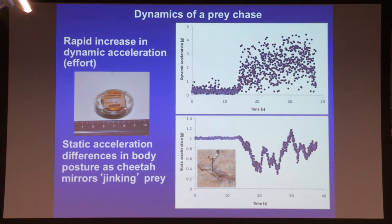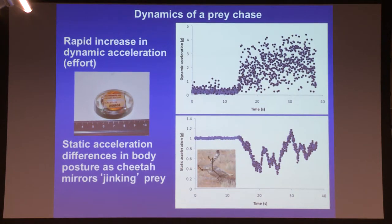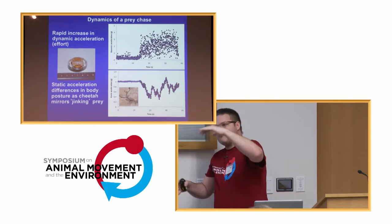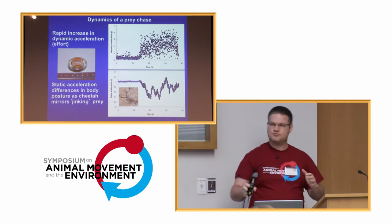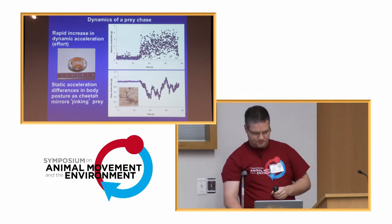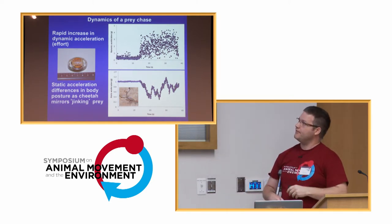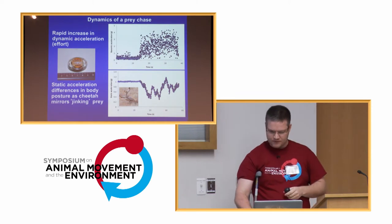It starts at one G-force — constant acceleration. As the cheetah starts moving around mirroring the prey at the end of the hunt, you can really track how the body posture of the animal is changing as it mirrors the evasive tactics of the prey.